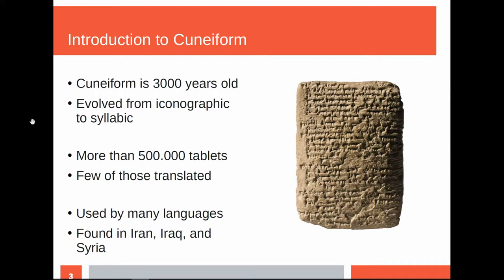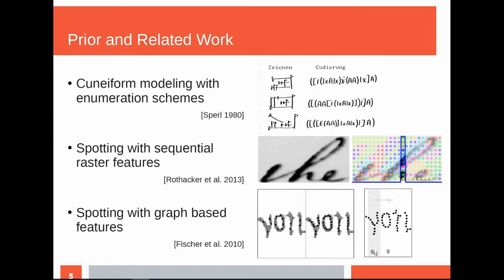How has this challenge been approached before? There is old work which deals with encoding or enumerating cuneiform, but what it does is it uses human-generated coding. You look at a cuneiform symbol and you find a coding for it and then you can try to search it, but in any case you cannot do this automatically. Usually in encoding Latin words, we have two different approaches: either we go from raster images and try to find feature descriptions, or we try to find very specific things in the images which we can then encode. We can depict words in Latin with a graph-based approach.